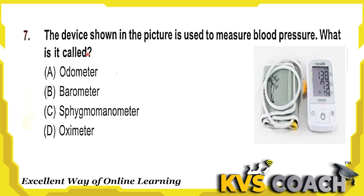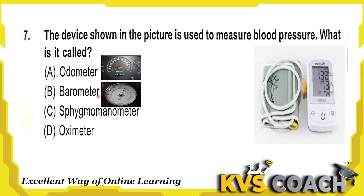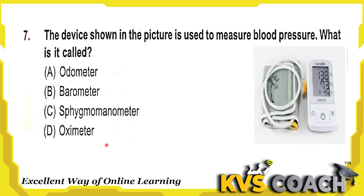Next question: the device shown in the picture is used to measure blood pressure — what is it called? Option A is an odometer, used to measure the speed of vehicles. Option B is a barometer, used for checking air pressure. Option C is a sphygmomanometer, used to check or monitor blood pressure. Option D is an oximeter, used to check oxygen level. So the right answer is sphygmomanometer.